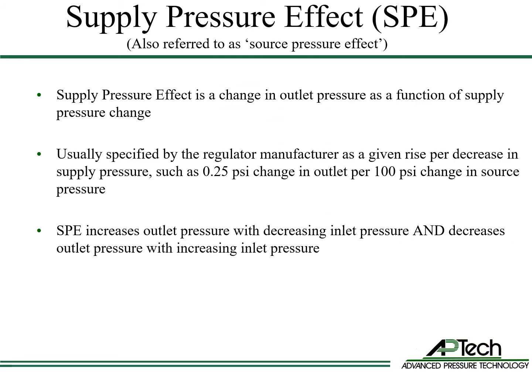Supply pressure effect is a change in outlet pressure as a function of supply pressure change. This effect is usually specified as the change in outlet pressure per change in inlet pressure — for example, 0.25 psi change in outlet pressure per 100 psi change in inlet pressure. Normally, supply pressure effect is encountered when the inlet pressure decreases as gas cylinders are consumed. As a result, outlet pressure increases as a gas cylinder is consumed. However, the supply pressure effect works with both decreasing and increasing inlet pressure: an increase in inlet pressure will cause a decrease in outlet pressure at the same rate as specified.